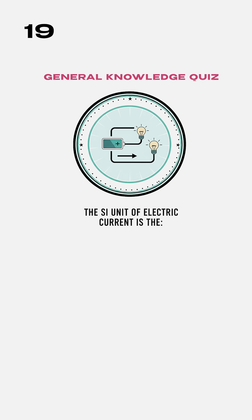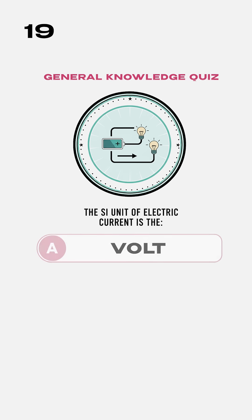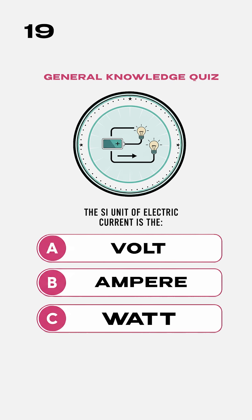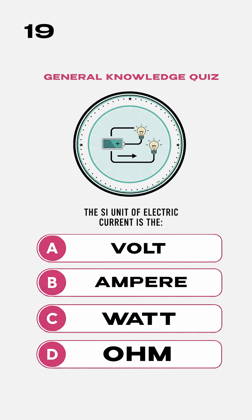The SI unit of electric current is the: A. Volt. B. Ampere. C. Watt. D. Ohm.